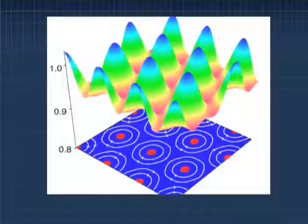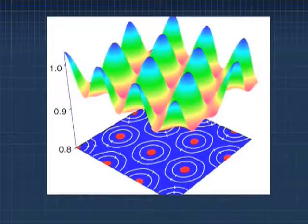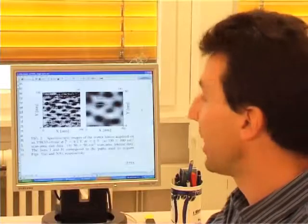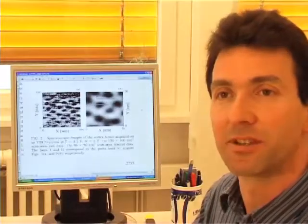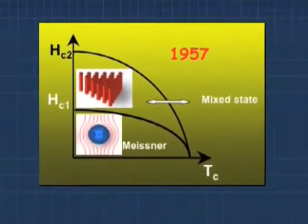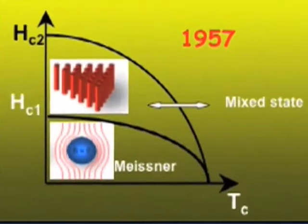We can go to very high fields, like in this case six tesla, where the image was acquired. But actually there is no limitation in the field. We can go up to the maximum limitation of BC2, where the cores start to overlap.